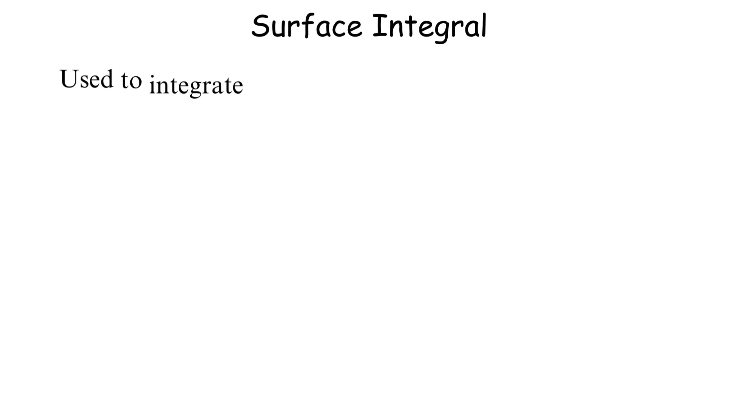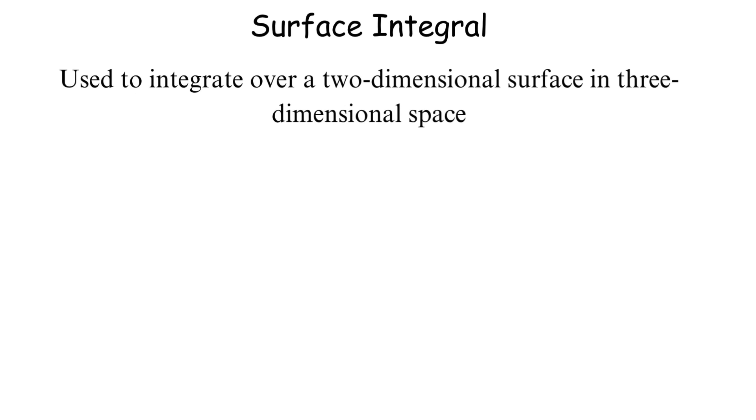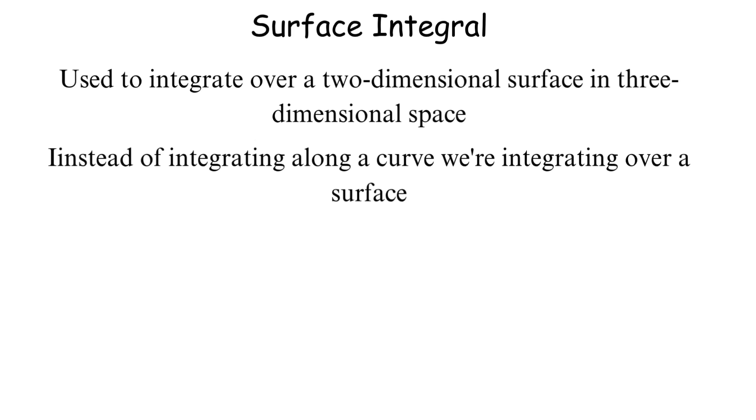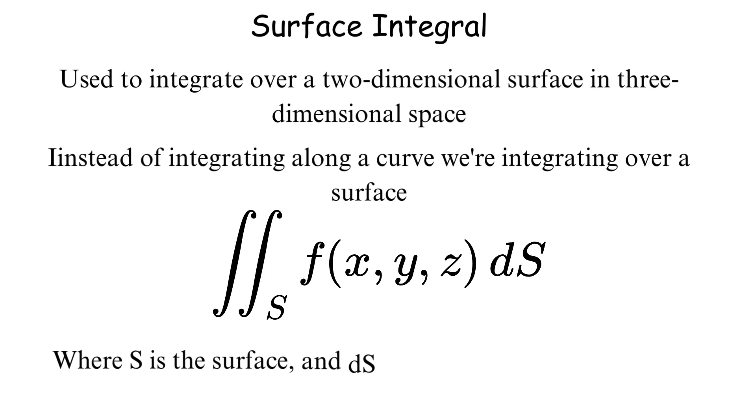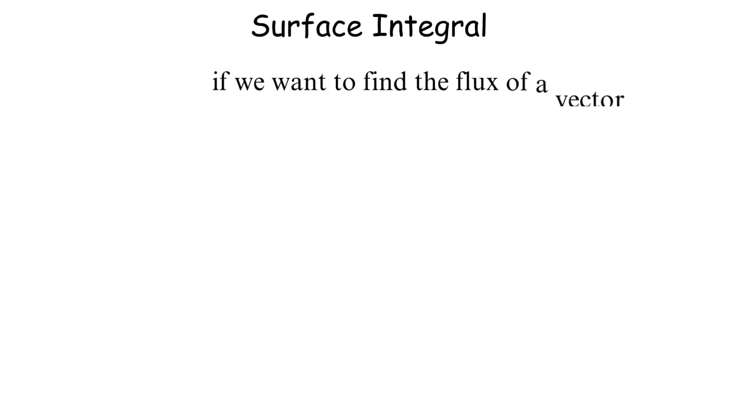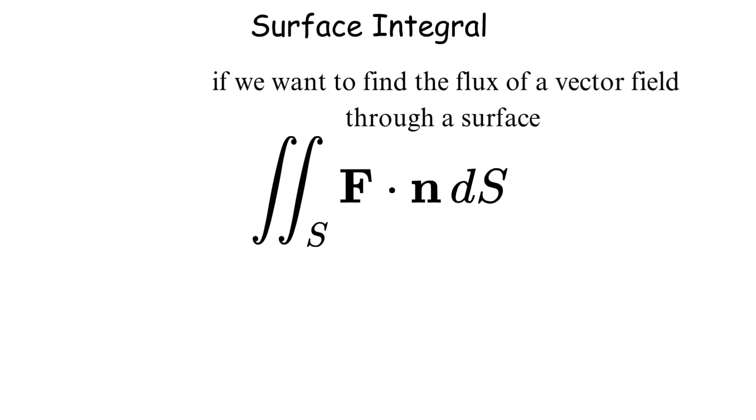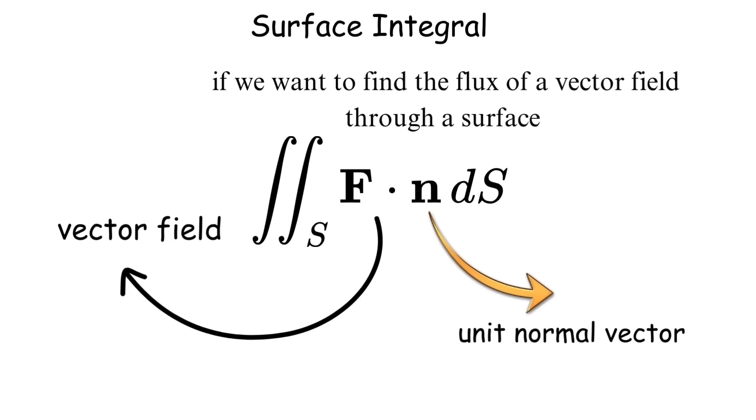Surface integral. This is used to integrate over a two-dimensional surface in three-dimensional space. Instead of integrating along a curve, we're integrating over a surface, where s is our surface and ds is a small piece of surface area. For example, if we want to find the flux of a vector field through a surface, we calculate the integral of f dot n ds, where f is the vector field and n is the unit normal vector to the surface.